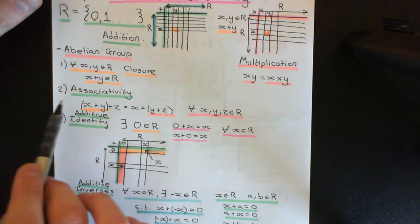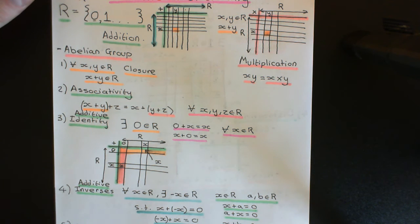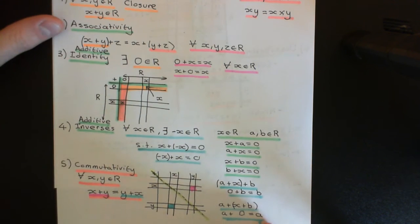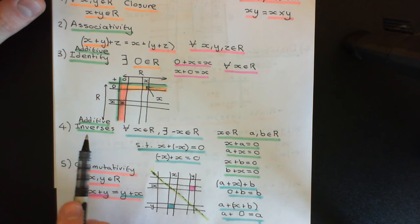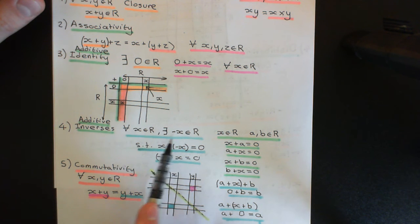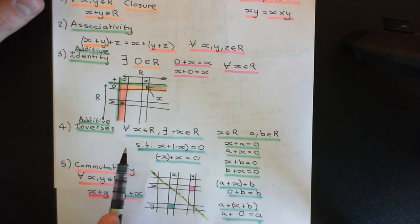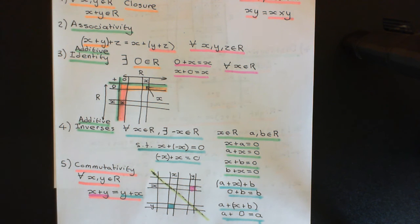It does obey associativity: when you add three integers together, it doesn't matter where you put the brackets — it has one and only one answer. We do have an additive identity, which is zero. Zero adds to any other integer to give that other integer back again, either way around. We do have additive inverses, because for any integer you have the negative integer which will add to it to give zero. I will stress the point that there is no such thing as subtraction as a composition law in its own right — it's just adding additive inverses.